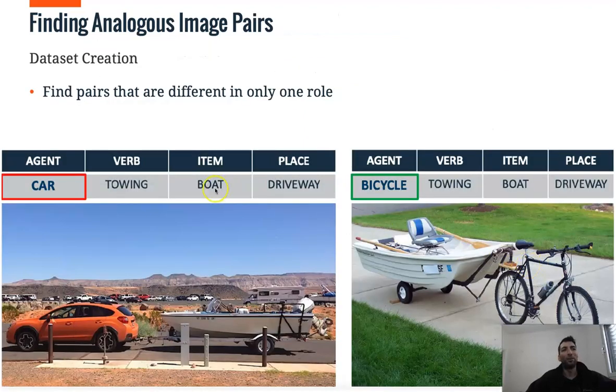And here we see a pair from our data set where we only have one difference between the semantic annotations, a car changed to bicycle, but both are towing a boat in a driveway.